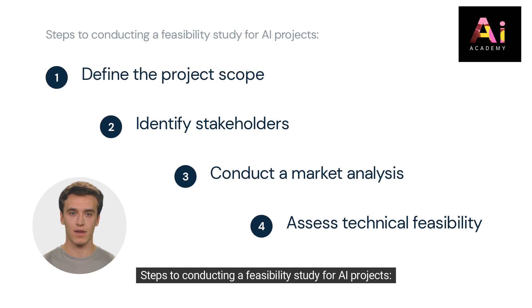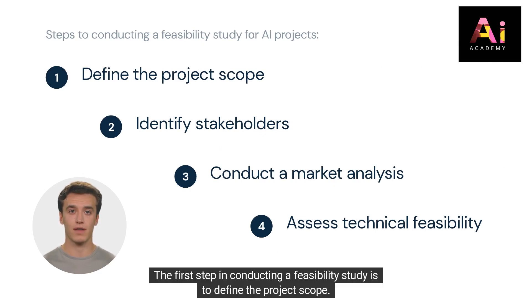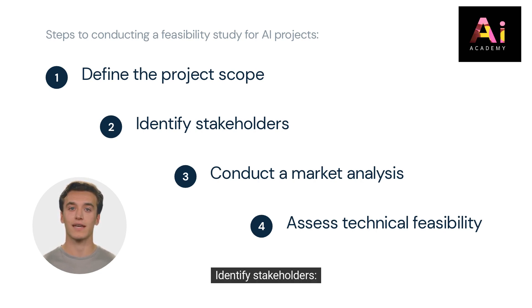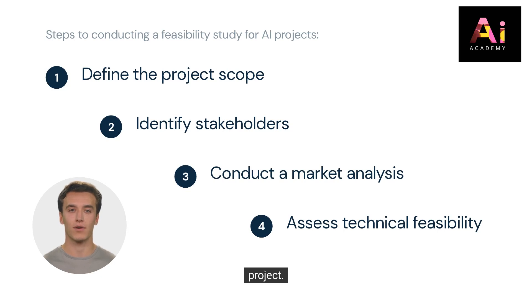Steps to conducting a feasibility study for AI projects. Define the project scope: the first step is to define the project scope — identify the problem that the AI project aims to solve and the desired outcomes. Identify stakeholders: identify all stakeholders, including employees, management, customers, and partners, who may be impacted by the project.